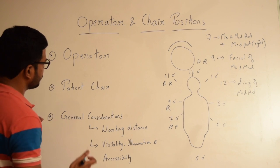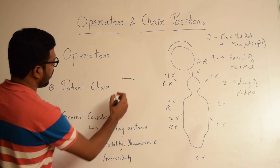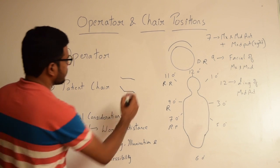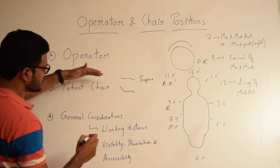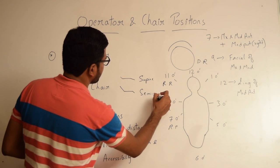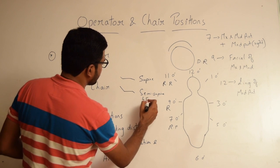Basically we have supine position or semisupine position. This is supine, the lying down position, and this is semisupine where we angulate the back of the chair at 45 degrees to floor.